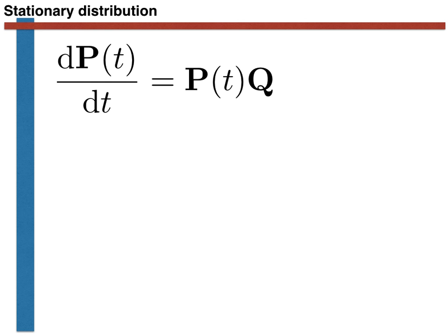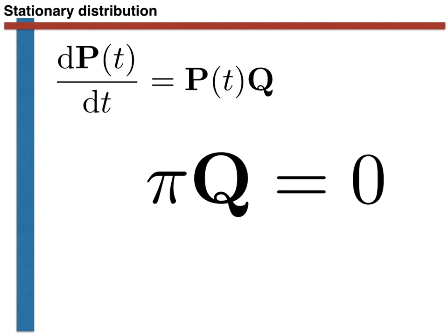We have arrived at the differential equation shown here dP of T by dt is equal to P of T multiplied by Q. Now suppose that there existed some non-zero vector pi that when multiplied by Q gave 0. What would this imply? Pi would be the stationary distribution of the Markov chain because P of T multiplied by Q is equal to the rate of change of P of T. If this is equal to 0 then it stands to reason that the rate of change is equal to 0.